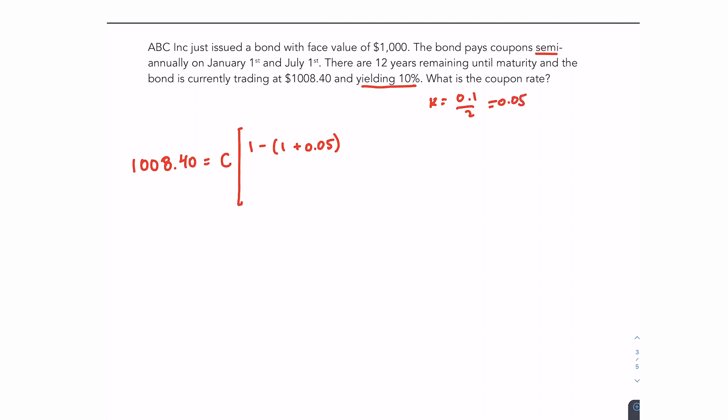So the ordinary annuity to begin, 1 minus 1 plus 5%. Now 5% is my rate because the bond is yielding 10% but is paid semi-annually. So my rate is 10% divided by 2. The exponent would be negative 24. Again, N is 24 because it's semi-annual and there are 12 years remaining until maturity. Divide all that by 0.05. Then we would discount the face value of 1,000 at 5% for 24 periods.